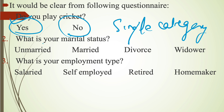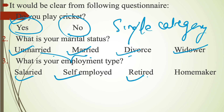The second example is: What is your marital status? Here, four options are given to the respondents — unmarried, married, divorced, and widower. The respondent has to choose only one option from the given responses. The third example is: What is your employment type? It may be salaried, self-employed, retired, or homemaker. The respondent has to select only one option from the given responses. This is the example of a single category scale.